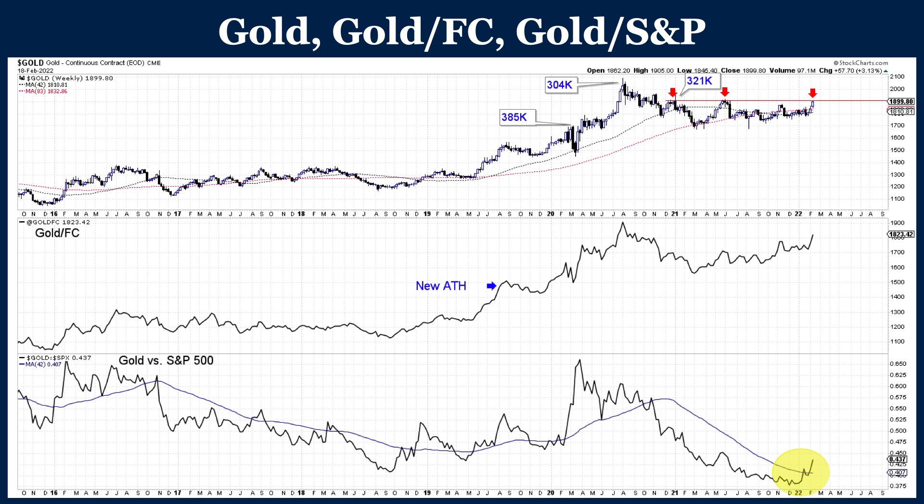This is a weekly candle chart. We have gold at the top. In the middle, we have gold against foreign currencies. And at the bottom, we have gold against the stock market — gold against the S&P 500.